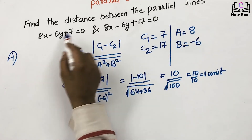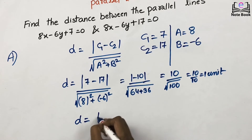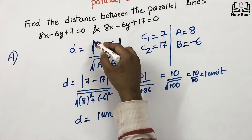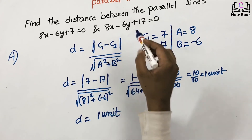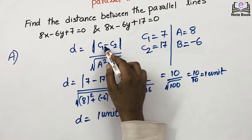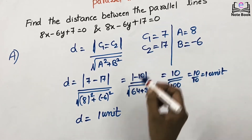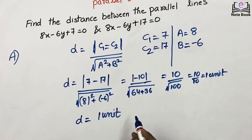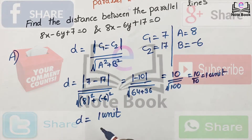The distance between these two parallel lines is d = 1 unit. We should be careful with the modulus value and with the minus and positive signs. This ends our session on distance between two parallel lines. Let us look at some more problems and exercise problems in the next session.